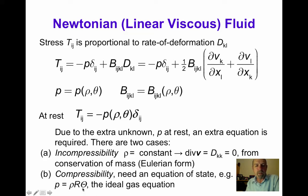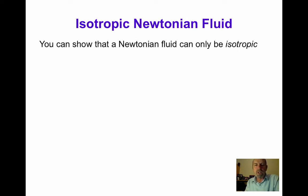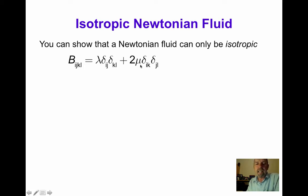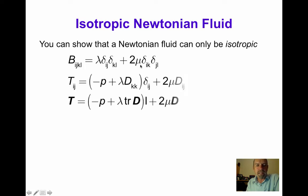We can show that a Newtonian fluid can only be isotropic, which simplifies the fourth-order viscosity tensor down to two parameters λ and μ, such that b_ijkl equals λ δ_ij δ_kl plus 2μ δ_ik δ_jl. Substituting this into our constitutive equation, we get T_ij equals minus p plus λ D_kk times δ_ij plus 2μ D_ij, where μ is called the viscosity.